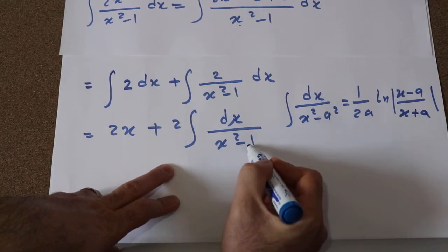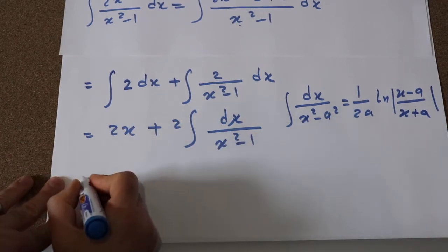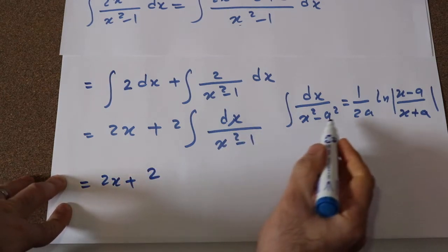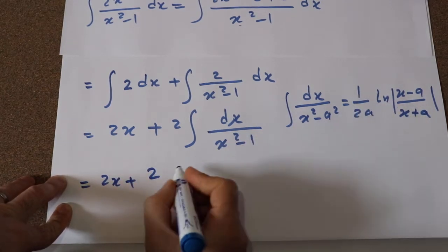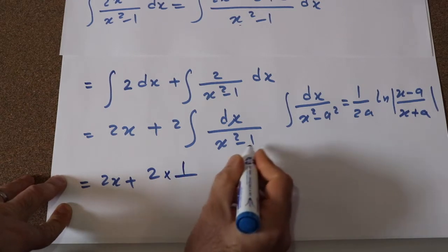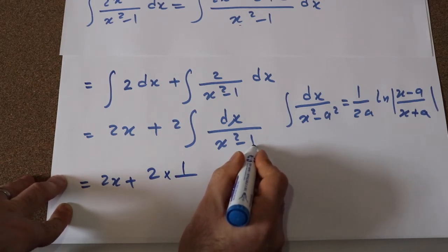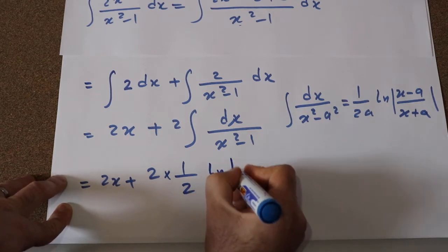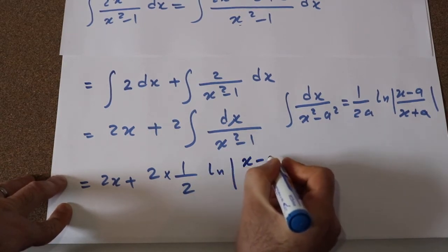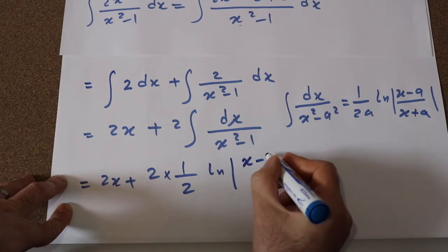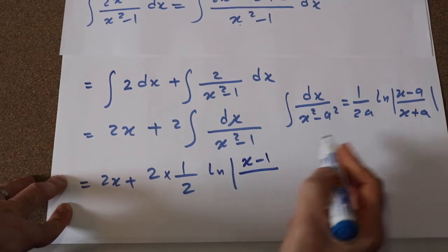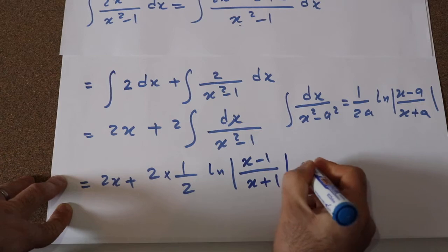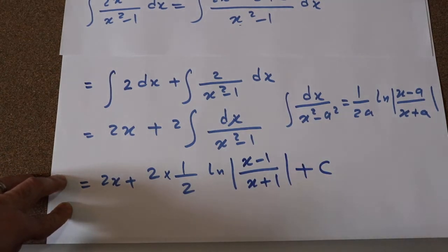Here the value of a is equal to 1. Therefore, this becomes 2x plus 2 times 1/(2·1), which simplifies to 2x plus ln|(x - 1)/(x + 1)| plus c, where c is the constant of integration.